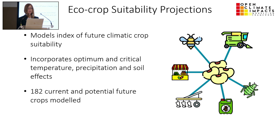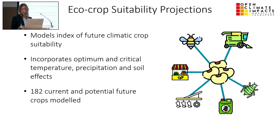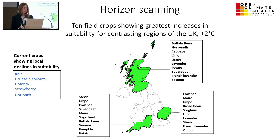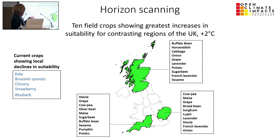Moving on to changes in land suitability for growing different crops as climate changes — this is simulated using a model called EcoCrop, which uses temperature, precipitation, and soil effects to determine the suitability of growing 182 different crops. Here you can see the results for maize: a crop where there are considerable increases in the potential for growing it as the climate changes. Looking across all 182 crops, the team isolated the 10 crops with the greatest increases in suitability in different parts of the UK — for example, large increases for buffalo bean and horseradish in Scotland, cowpea in East Anglia, or stevia in the West Country.